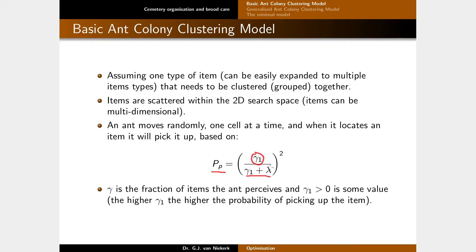γ1 is a constant value. The higher this value, the higher the probability of picking up an item regardless. The lower it is, the more λ comes into play. λ is the number of items of that specific type the ant has seen over a number of time steps. For example, if it has seen 10 items in 100 steps, that's 0.1, and we square that to get the pickup probability.